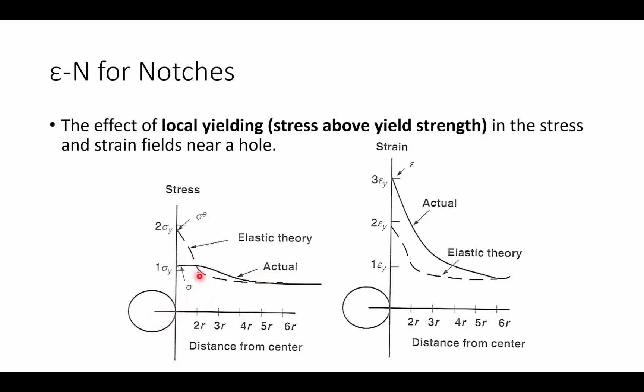This reduction in stress, where the stress is not at the linear elastic point but it's actually at the yield strength, corresponds with plastic deformation. So when we look at the strain fields, we see that elastic theory assumes a certain amount of strain, a pretty low value, while in actuality we have much more strain due to the plastic deformation. With strain hardening materials, when we reach the yield strength, stress remains low and strain begins to grow.